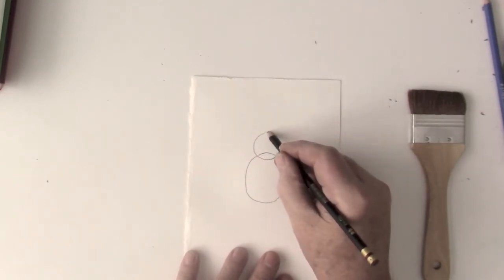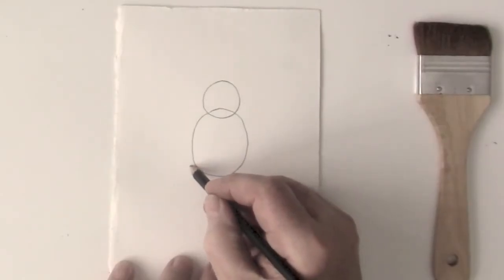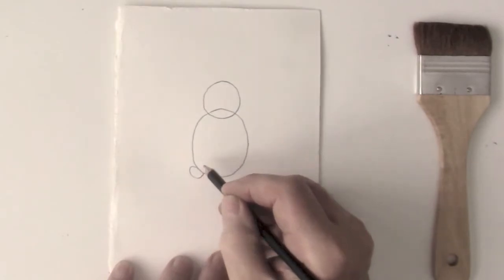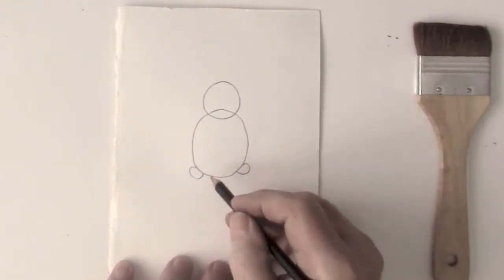Then put a smaller shape on top. All along the bottom, what I want you to do before we do anything else, is I want you to put in, pretend they're two feet, but they're not. They're rocks.